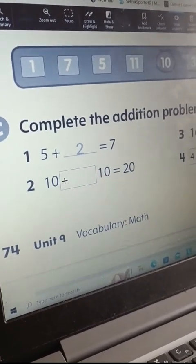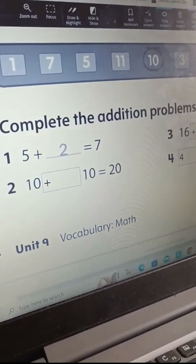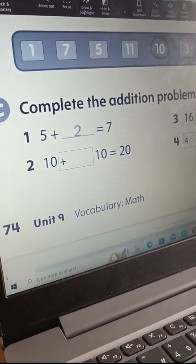One. Five plus two equals seven. Very good.